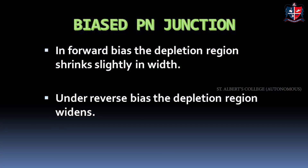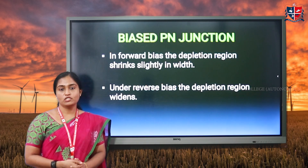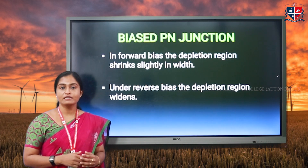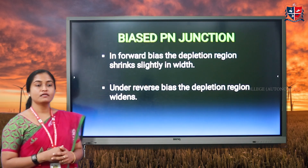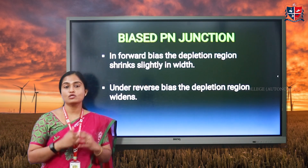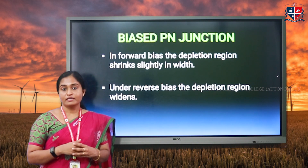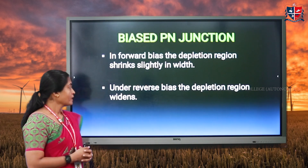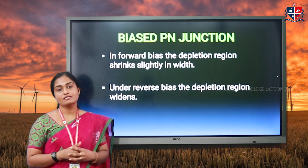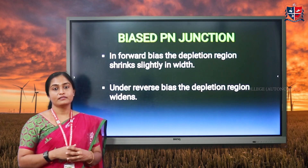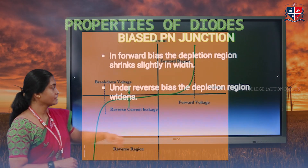A PN junction can have two different types of biases: forward biasing and reverse biasing. In forward bias, the thickness of the depletion region shrinks and the current conduction will be maximum. In reverse bias, the width of the depletion region increases and it will create a higher resistance for the current flow.